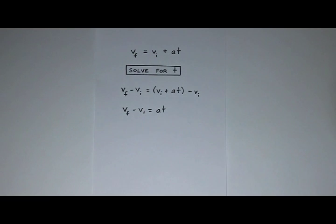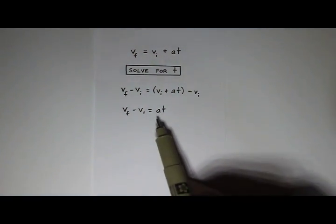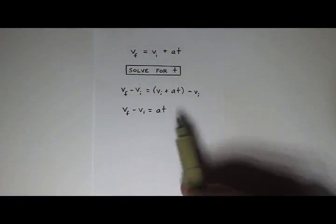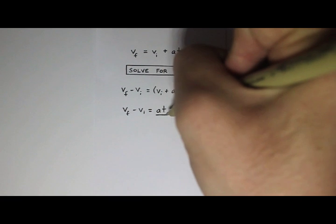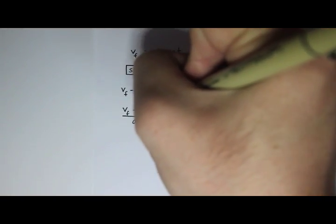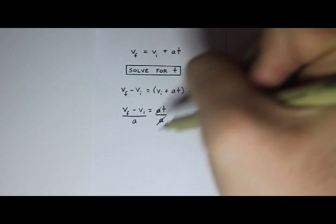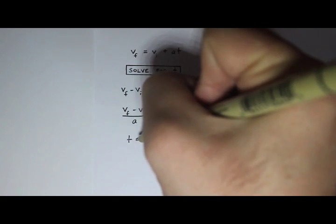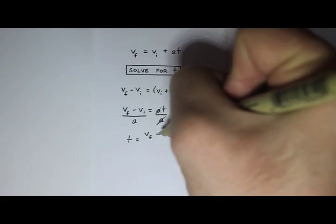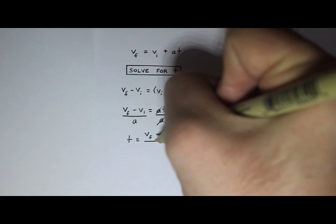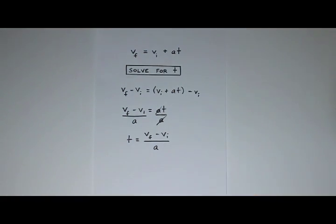Now I've just got to get the t by itself. To get the t by itself, I want to divide out the a, since the a is multiplying the t. So I divide both sides by a, divide by a, divide by a, the a's cancel. And I get t equals v final minus v initial divided by a.